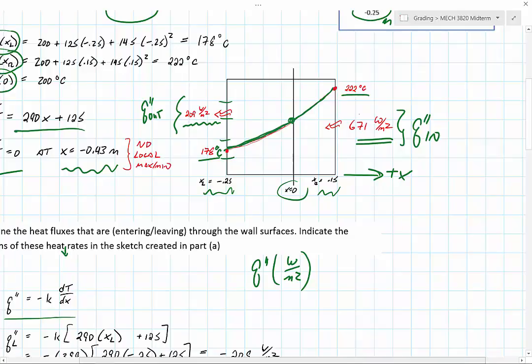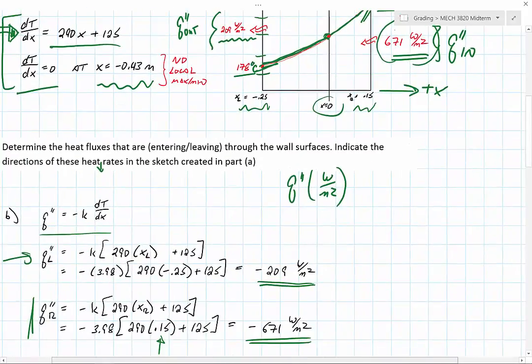You can see that the values are quite different, but you can also tell that by looking at the slopes. The slope of this curve is fairly shallow, where the slope of this curve is fairly broad. Since the heat rate is proportional to the slope of the curve, you'd expect the heat flux on the right hand wall to be considerably greater, which indeed we do find out to be the case.